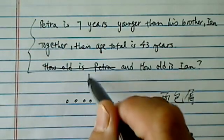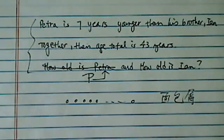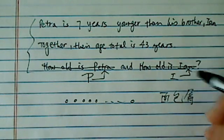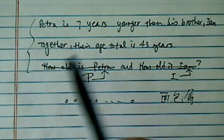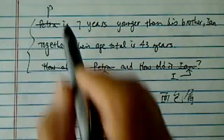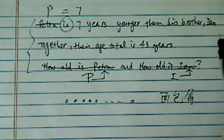We're going to assume we know Petra is P years old and Ian is I years old. So what we're going to do, every time we say Petra, we're going to say P is, means equal, seven years younger than his brother.